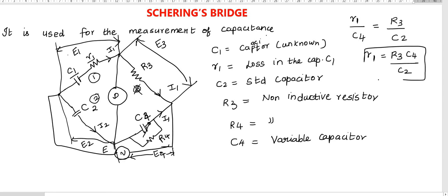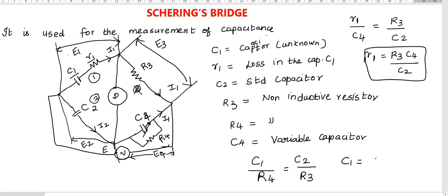In a similar manner, how to find C1? First write C1 — the resistance opposite to C1 is R4. That is equal to the second branch which has C2, and the resistance opposite to that is R3. So the equation for C1 is: C1 = R4·C2 divided by R3. This is the easy way to remember it.